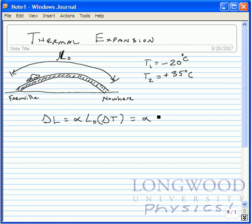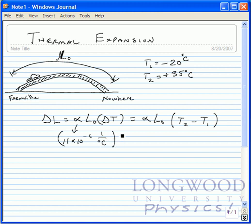So this is equal to alpha L0 times T2 minus T1. Now in our case, for minus 20 degrees and 35 degrees, what's going to be the difference in the length at those temperature extremes? Steel has a coefficient of 11 times 10 to the minus 6, 1 over degrees Celsius. We multiply that times the initial length, which we'll say is 500 meters, then multiply that times the temperature extremes: 35 degrees Celsius minus minus 20 degrees Celsius.